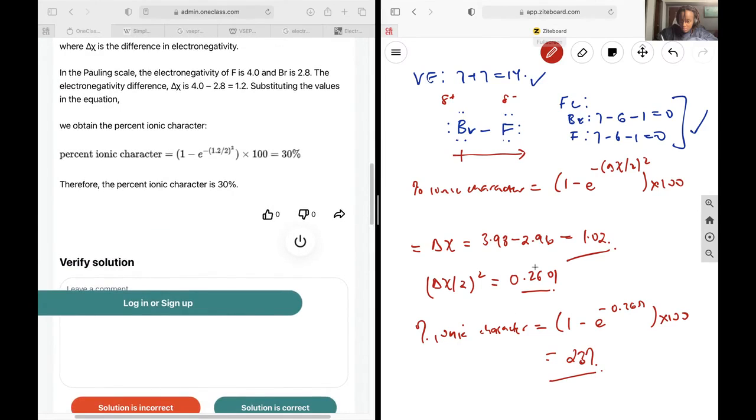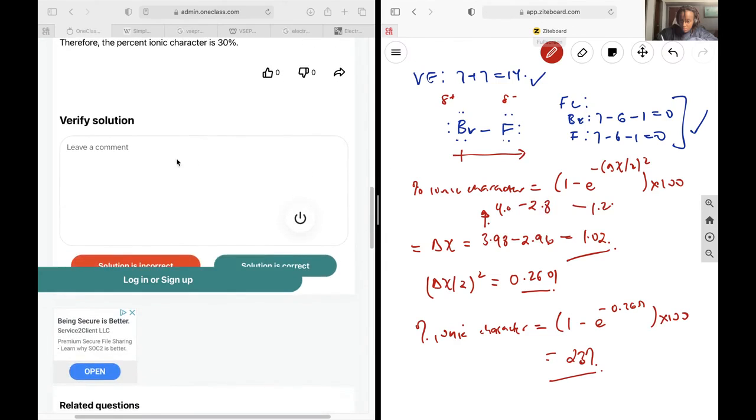Sorry, it seems I used, yeah, and so in this case you can see that this person used the electronegativity values to like one decimal point, and this would give you 4.0 minus 2.8, giving you that 1.2 that they squared. And so just be very careful about the significant figures that you're using if you want your answer to be more accurate.